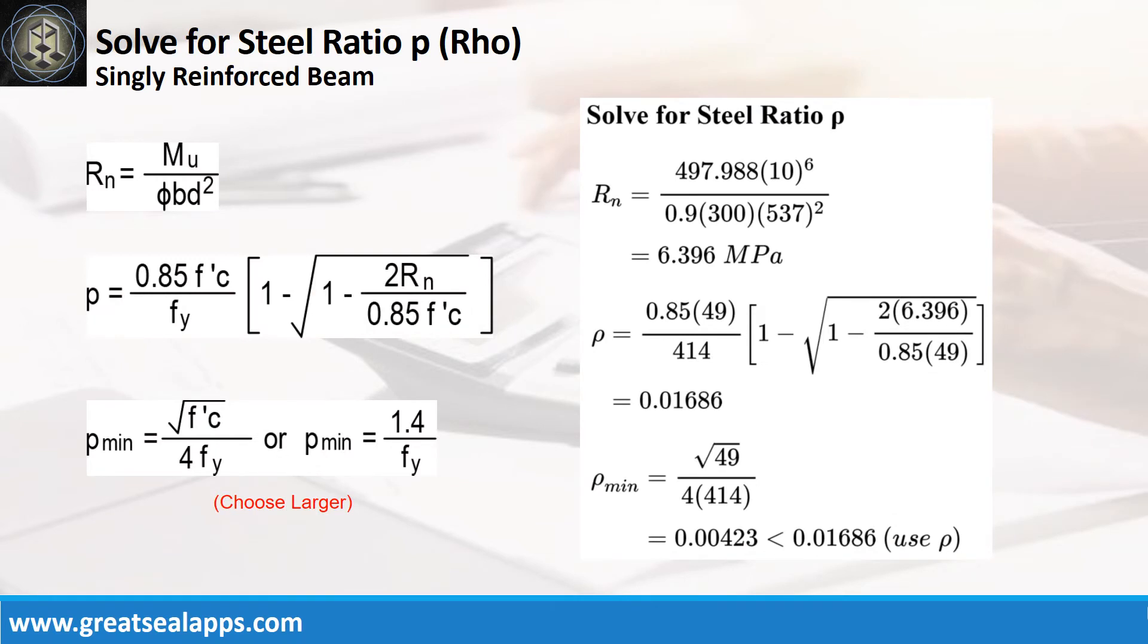The maximum moment equals 497.988 kN·m, resistance factor equals 0.9, B equals 300 mm, and D equals 537 mm, the beam design ratio R_N equals 6.396 MPa, and reinforcement ratio ρ equals 0.01686.